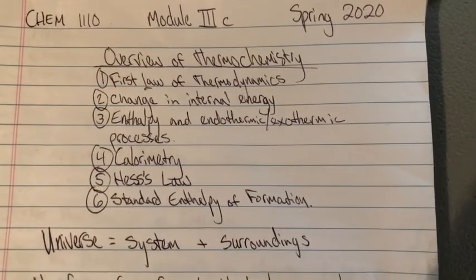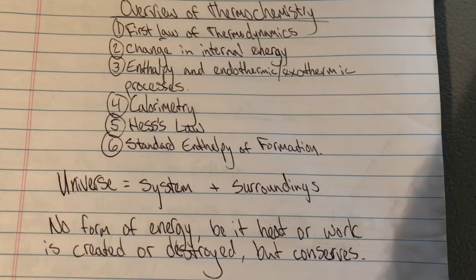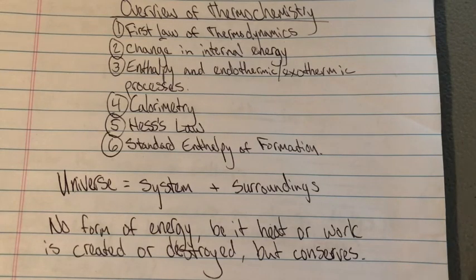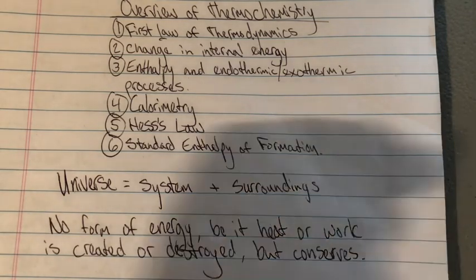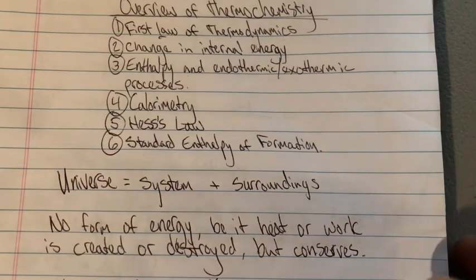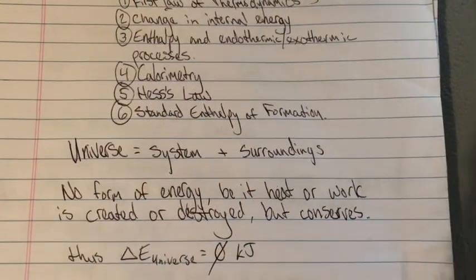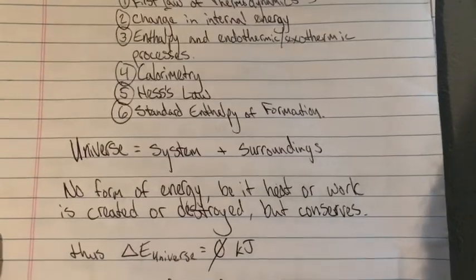The first thing we'll cover is the first law of thermodynamics. The energy of the universe is equal to the system plus its surroundings — no energy can be created or destroyed, it's always conserved. Either one thing is giving it off or one thing is absorbing it. Thus, the change in internal energy of the universe is essentially zero — zero kilojoules, zero joules, no matter how you look at it.